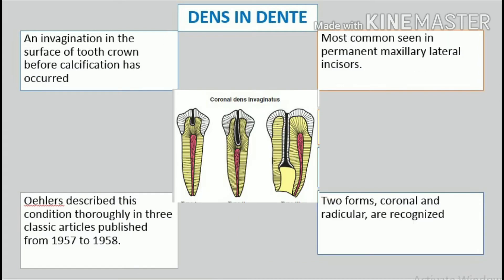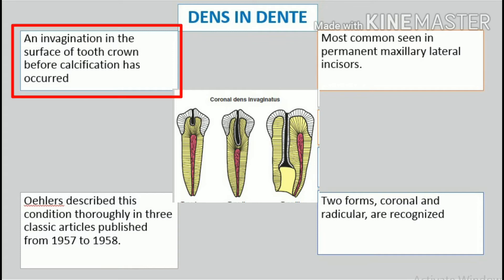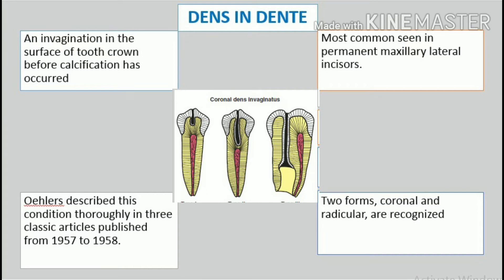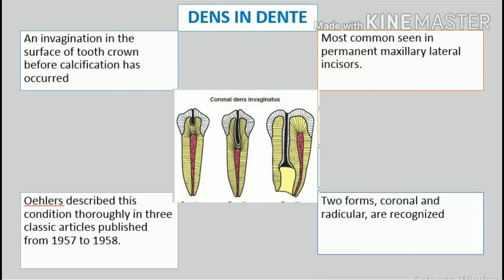Dens in dente. Dens in dente is a developmental variation thought to arise as a result of an invagination in the surface of the tooth crown before calcification has occurred. The permanent maxillary lateral incisors are the teeth most frequently involved, and in the majority of cases the dens in dente appears to represent simply an accentuation in the development of the lingual pit.